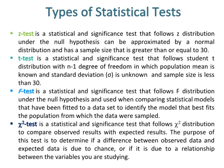Chi-square test is a statistical and significance test that follows Chi-square distribution to compare observed results with expected results. The purpose of this test is to determine if a difference between observed data and expected data is due to chance, or if it is due to a relationship between the variables you are studying.